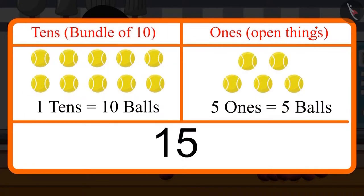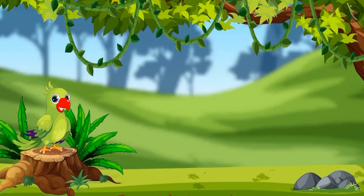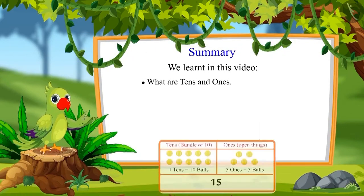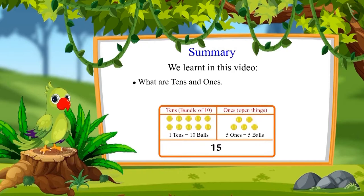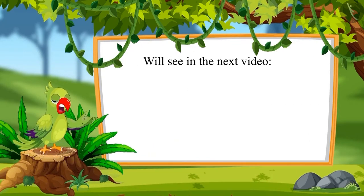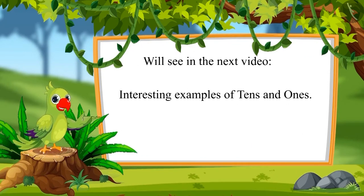So the total is 15 balls. That's all for today, children. In this video, we learned what are tens and ones, and how to write numbers in the form of tens and ones. In the next video, we will look at some more interesting examples of tens and ones. Till then, bye friends.